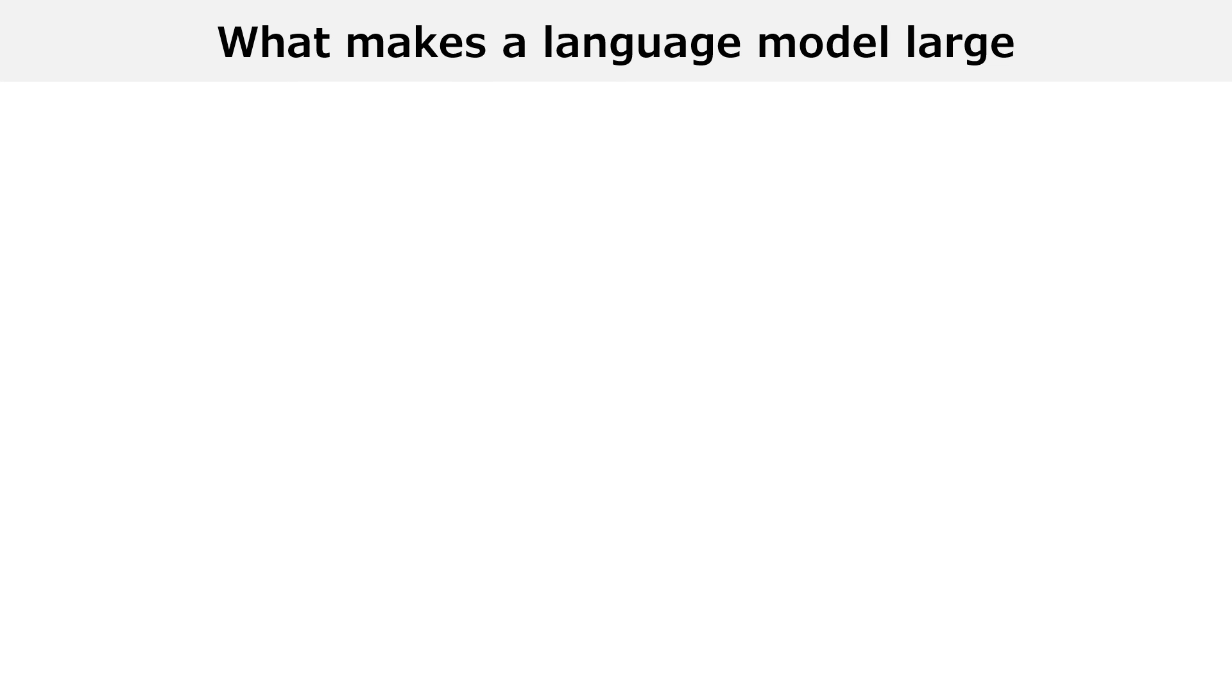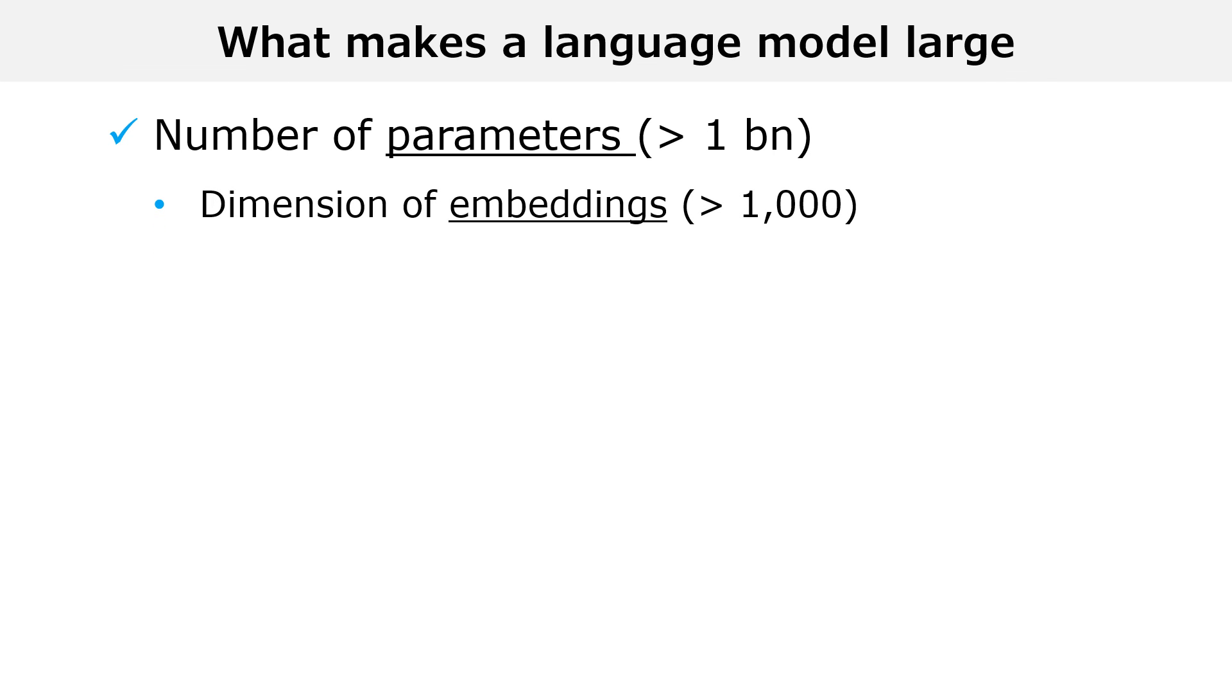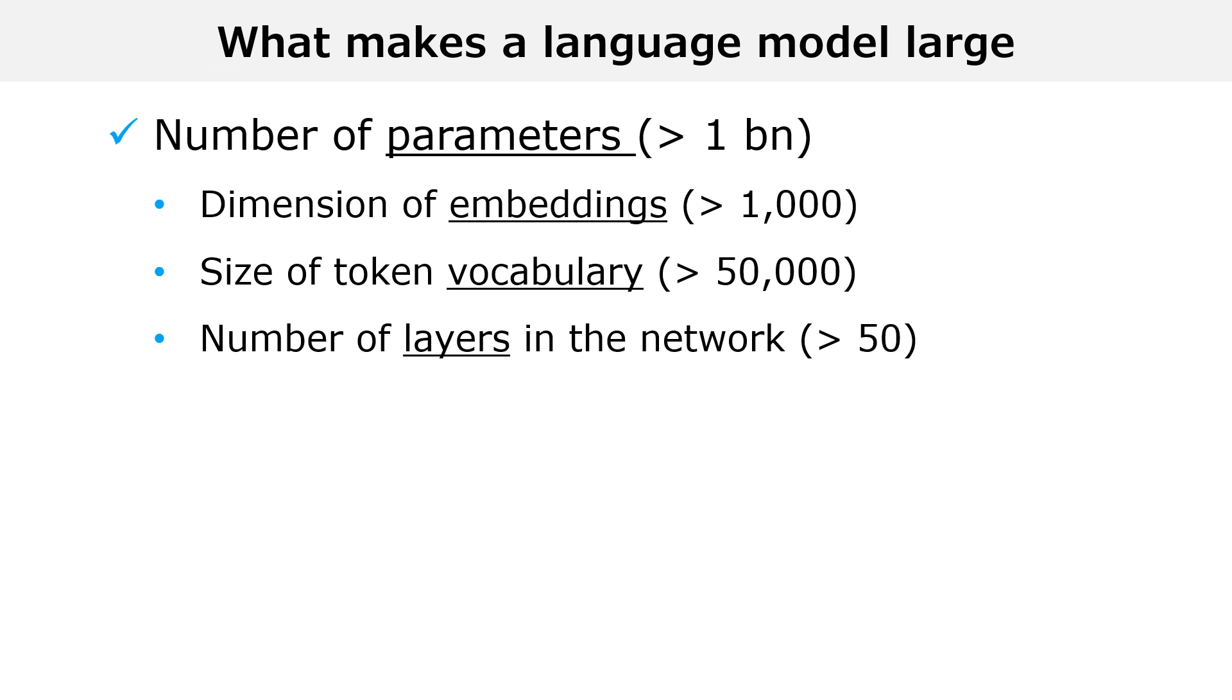The second thing that makes current language models so successful is their size. Researchers discovered that language models scale very well. The larger a language model is, the better it performs. But what do we mean by larger? One way to quantify the size of a model is by counting the number of its parameters. Large language models can have several billions of parameters. In turn, the parameter count is determined by architectural choices such as the dimension of the embedding vector, which is often larger than a thousand, the size of the token vocabulary, which usually exceeds fifty thousand tokens, the number of layers in the neural network, which can be larger than fifty.